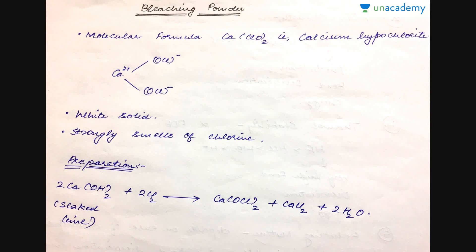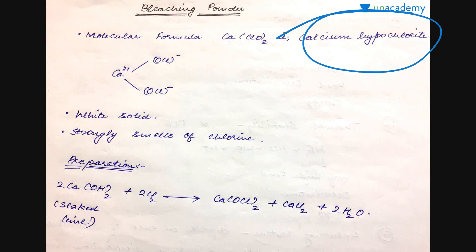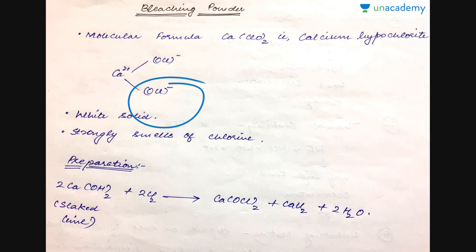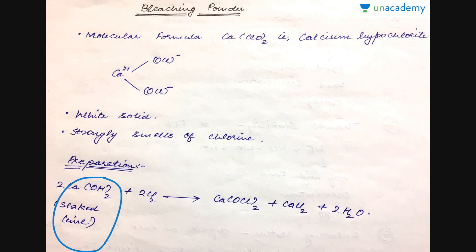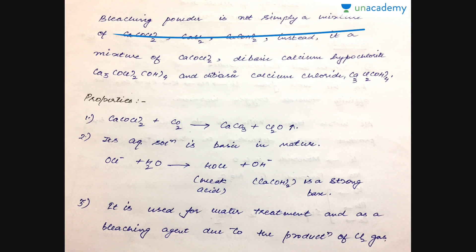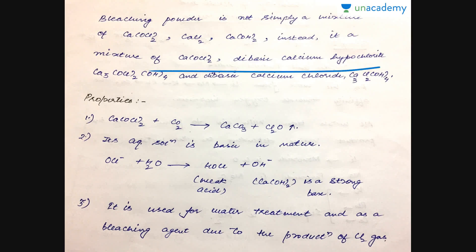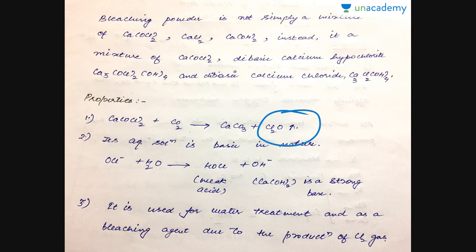The next important compound is bleaching powder with molecular formula Ca(ClO)₂ — calcium hypochlorite — consisting of Ca²⁺ attached to two ClO⁻ units. It is a white solid with a strong smell of chlorine, as commonly noticed in swimming pools. It is prepared by passing chlorine gas through slaked lime to give Ca(ClO)₂ and CaCl₂. It is not simply a mixture of calcium hypochlorite but also contains calcium hydroxide, dibasic calcium hypochlorite, and dibasic calcium chloride. On reaction with CO₂ it gives Cl₂O gas.